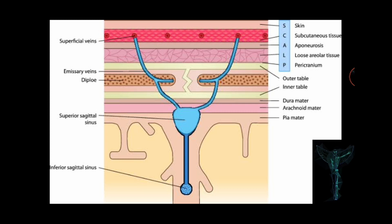The third layer is the epicranial aponeurosis — a thin, tendon-like structure that connects the occipitalis and frontalis muscles. The fourth layer is the loose areolar connective tissue, a thin connective tissue layer that separates the periosteum of the skull from the epicranial aponeurosis. It contains numerous blood vessels, including emissary veins, which connect the veins of the scalp to the deeper veins.